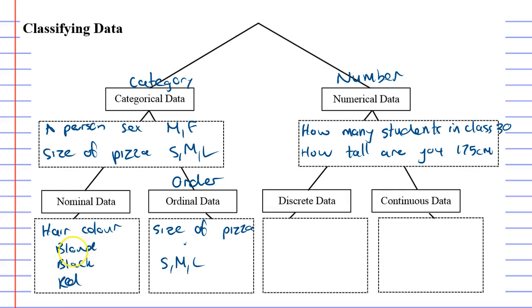The reason it's nominal data is it really doesn't matter the order in which you write them in. It could be red, black, blonde. There's no order to these.